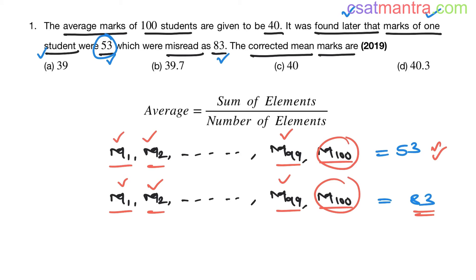Now, the examiner is saying that when the marks are misread as 83, the average is 40. He wants the corrected mean, the corrected average. Now, let us apply the average formula.